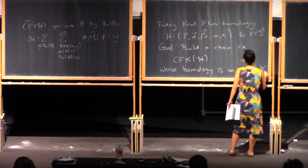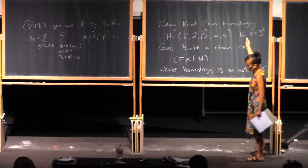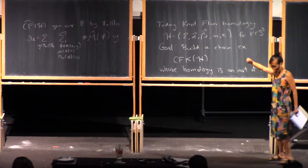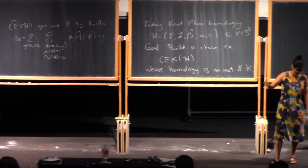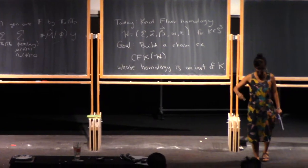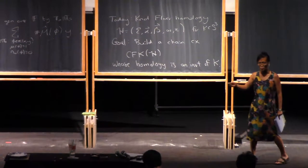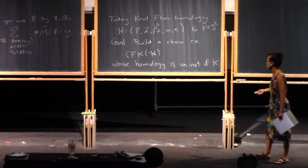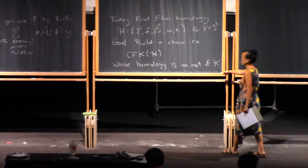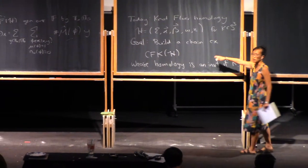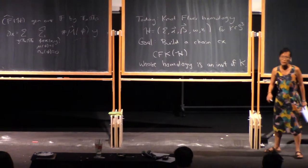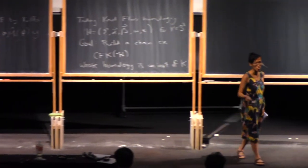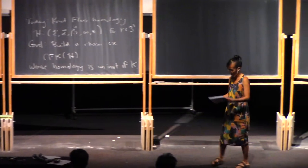On Monday I stated that any two doubly-pointed Heegaard diagrams for the same knot are related by a sequence of doubly-pointed Heegaard moves. So to show CFK is an invariant, you just show that the chain homotopy type is unchanged under doubly-pointed Heegaard moves.